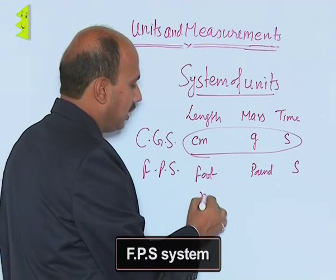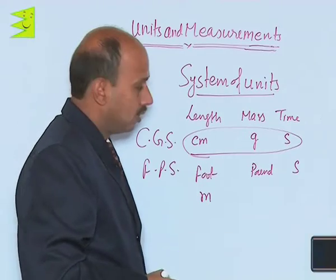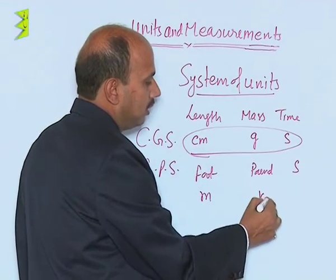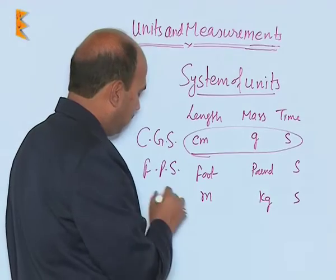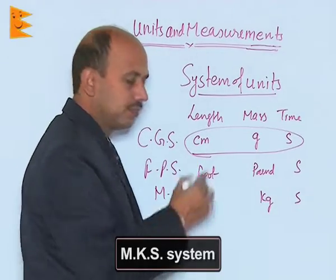If you are measuring length in meters, mass is in kg, and time is in second, this is called MKS system.